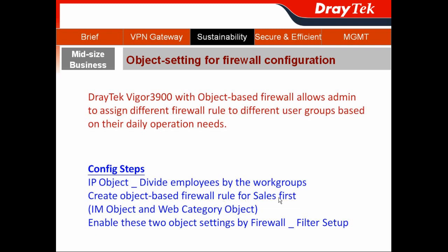In our case, we will start with the salespeople, including an IM object and a web category object to define their daily operations. After that, we go to the firewall filter setup to enable these two object settings.